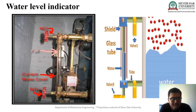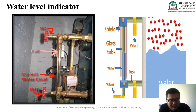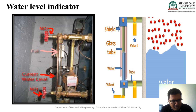First we discuss the water level indicator. As you know, a boiler is a device which converts water into steam, using hot flue gases. The water level indicator indicates the water level available inside the boiler. In the first figure you can see the actual figure of the boiler showing valve one, valve two, the glass tube, and the current water level.